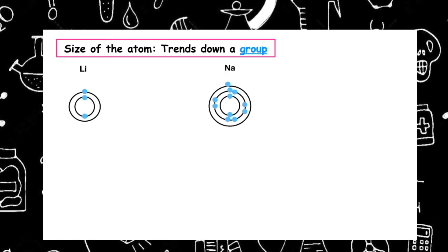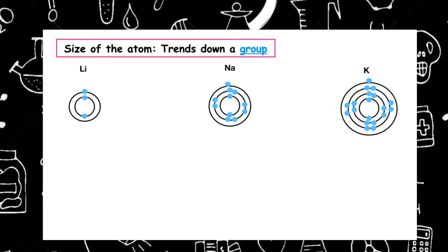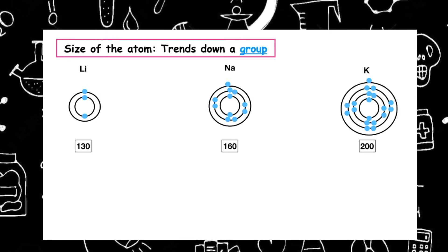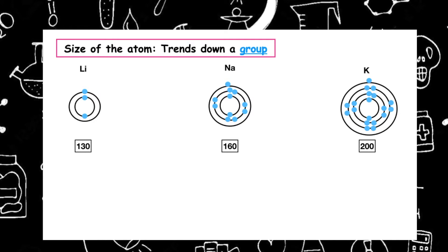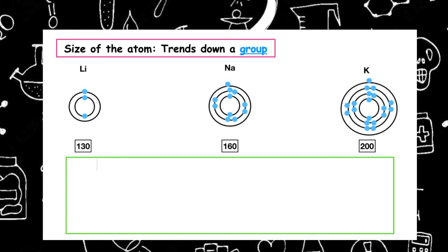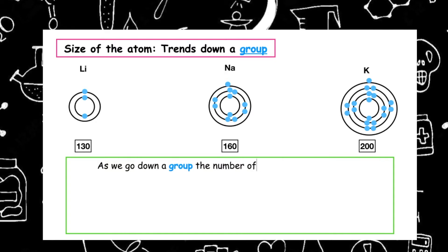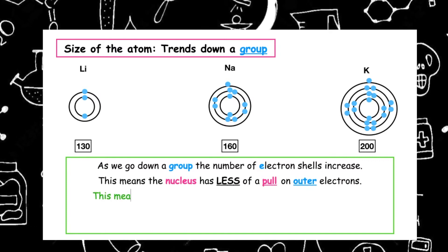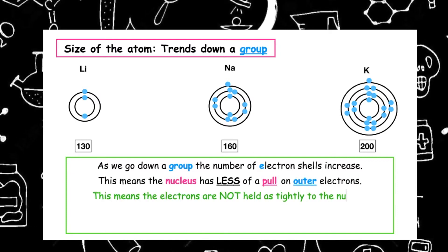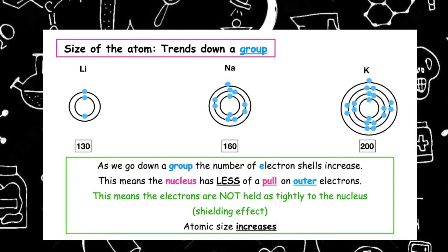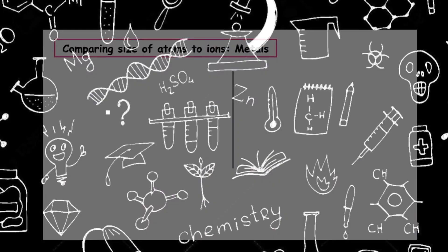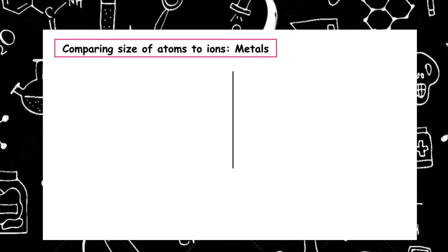If we look at the electron arrangement diagrams going down a group — from lithium to potassium — and select the covalent radius from page 7 of our data booklet, we can see that the covalent radius increases. This is because as we go down a group, the number of electron shells increases. This means the nucleus has less of a pull on the outer electrons, which is known as the shielding effect, and therefore the atomic size increases.